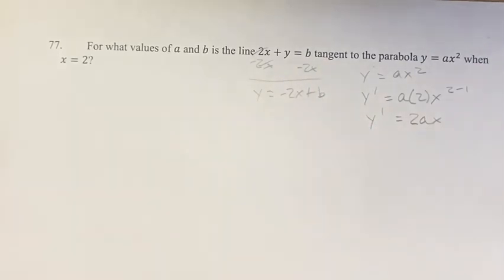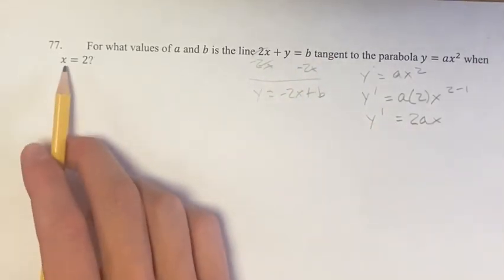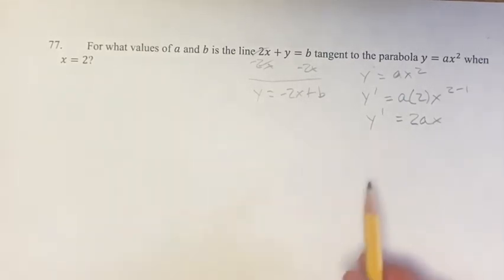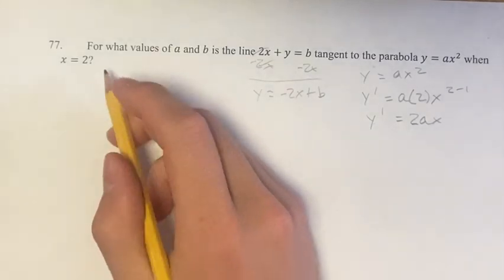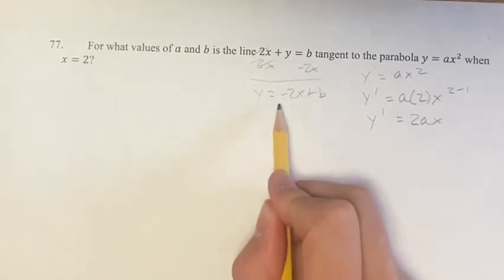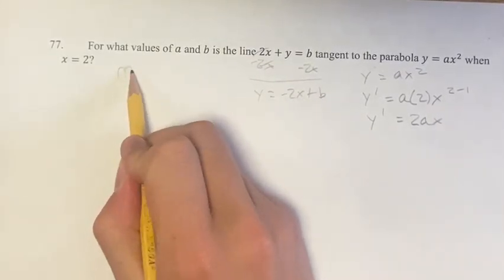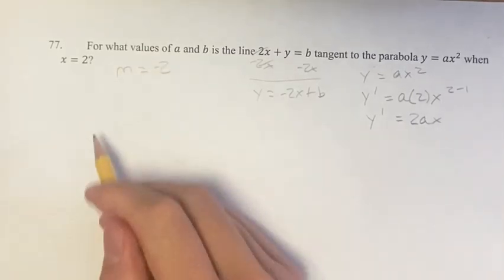If we're saying that this is the tangent line, it has, when x equals 2, the same slope as the derivative. So doing that here, if y equals negative 2x plus b, the slope is negative 2, which means the value of the derivative is negative 2.